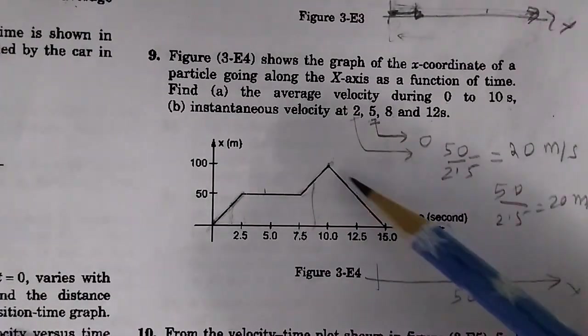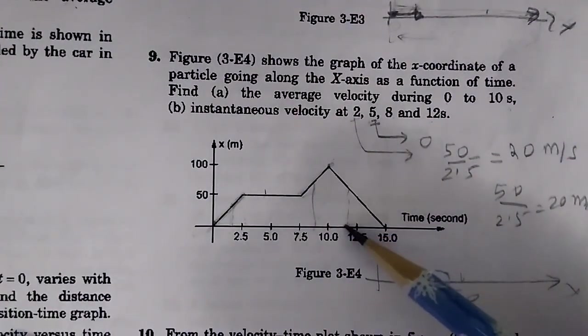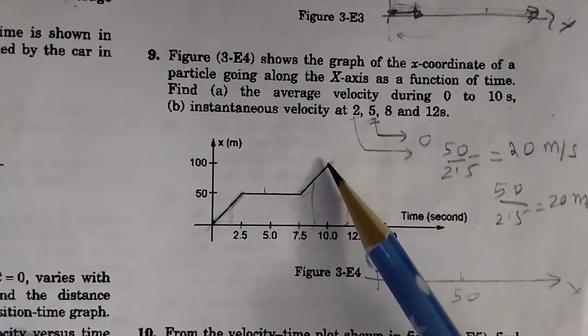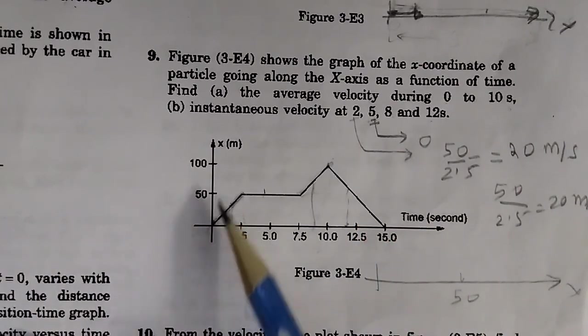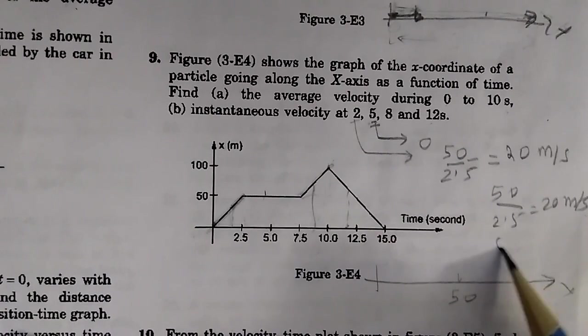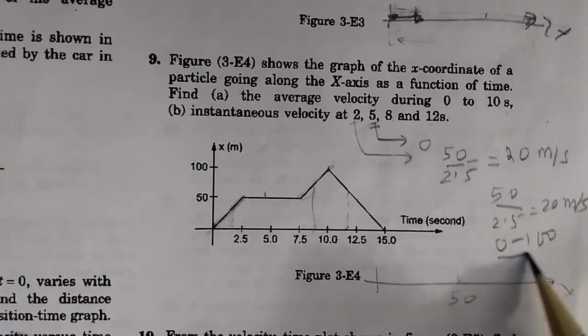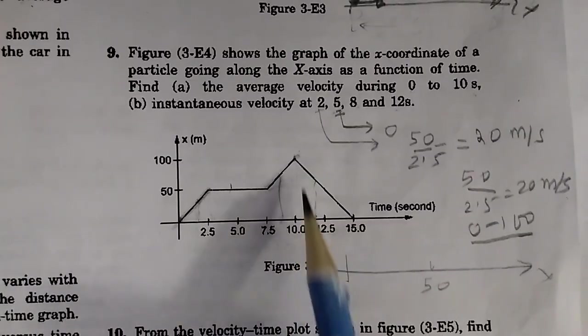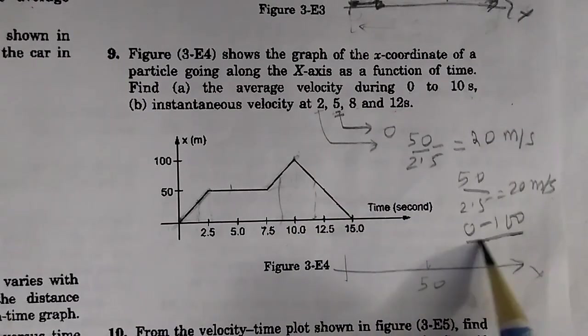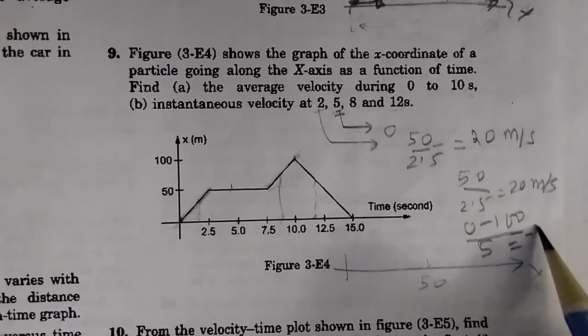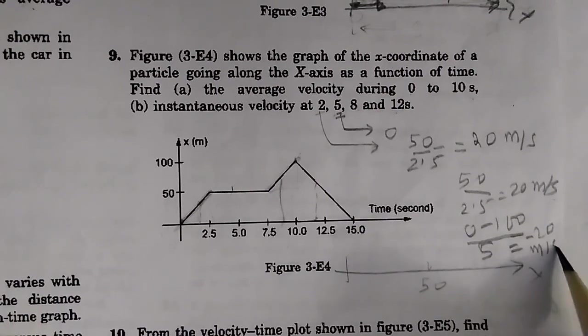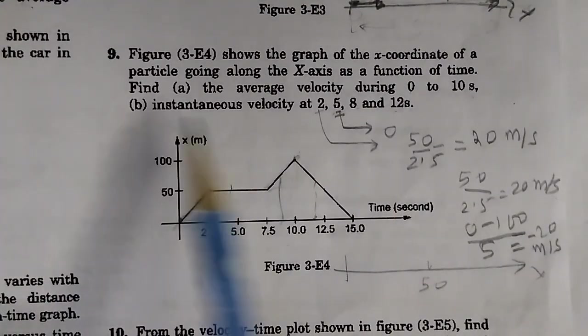And from 8 to 12, at 12 seconds, that means we need to find somewhere here, the velocity is negative and is given by the slope of this line, which is 0 minus 100 divided by this time, 10 to 15.5, and this will be equal to 100 by 5 or minus 20 meters per second. So this is part B we have done.